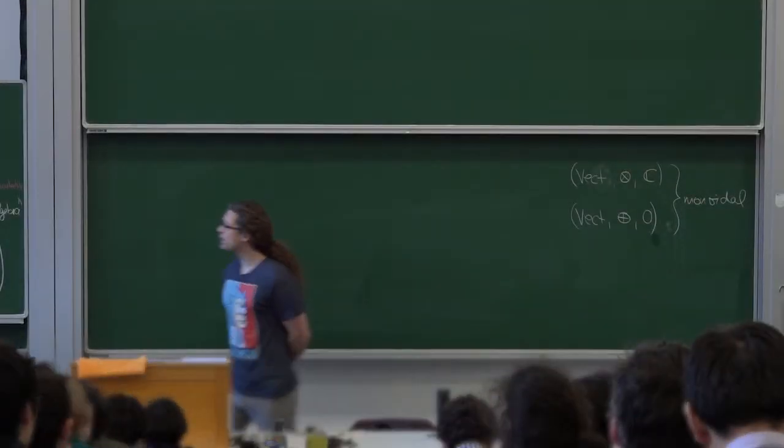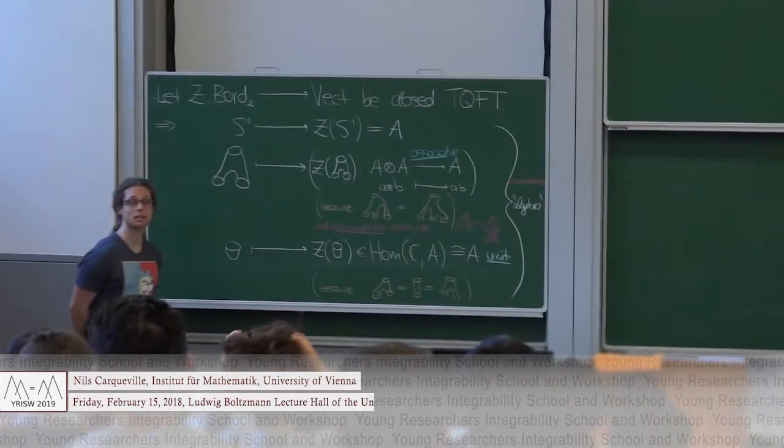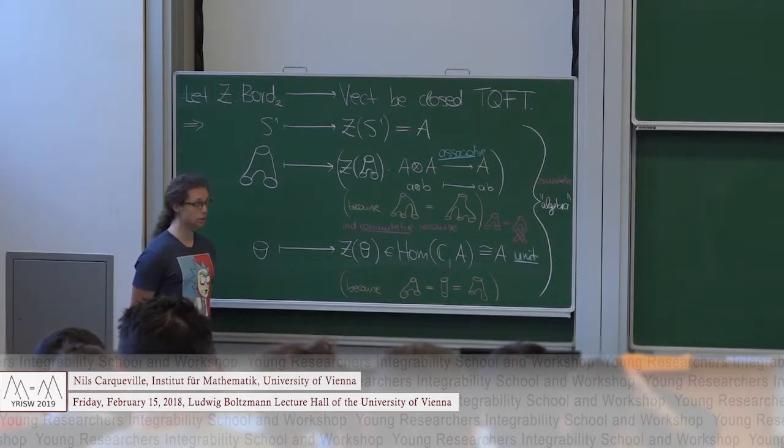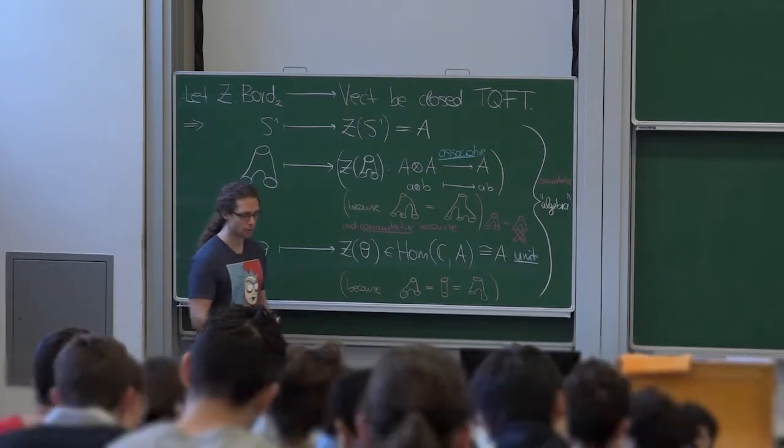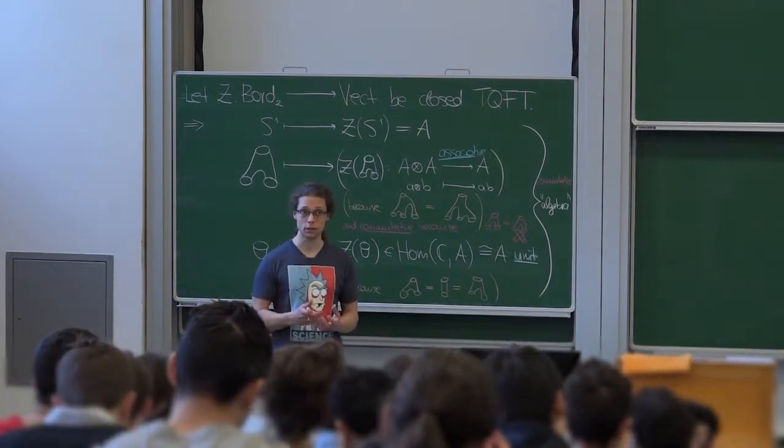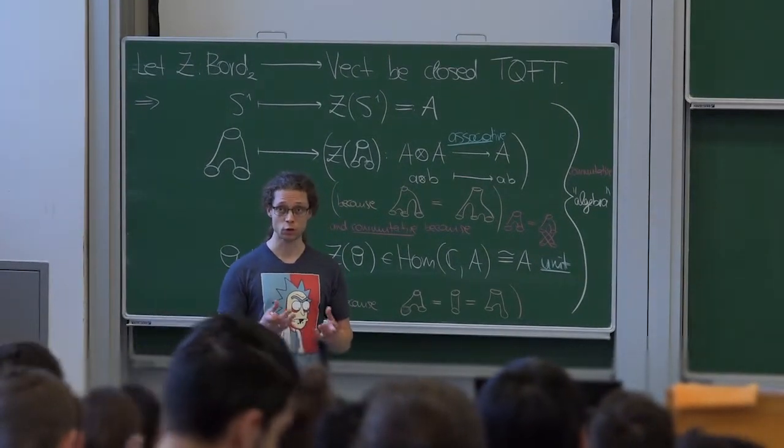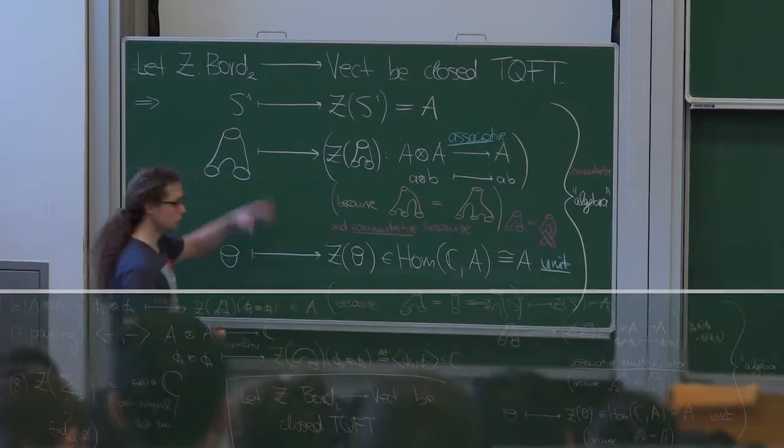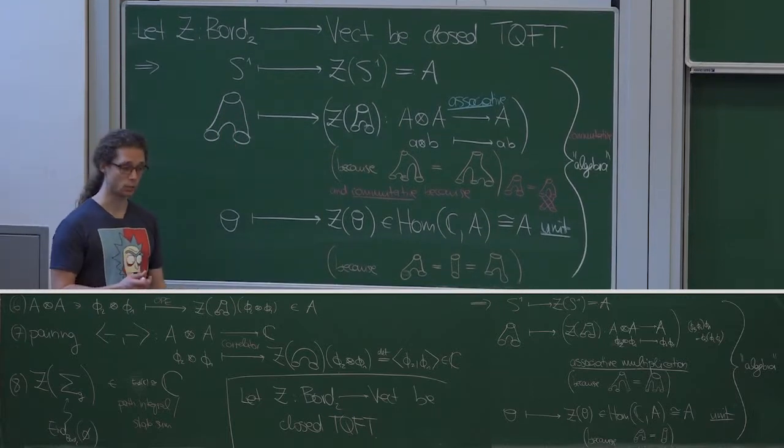Thanks for coming back. Yesterday I tried to argue why it makes sense to think of certain types of quantum field theories, in particular in two dimensions, as symmetric monoidal functors. I gave a list of features of QFT that I wanted to capture. We went through points 1 to 8, and point 9 was boundaries and defects to which I want to come today.